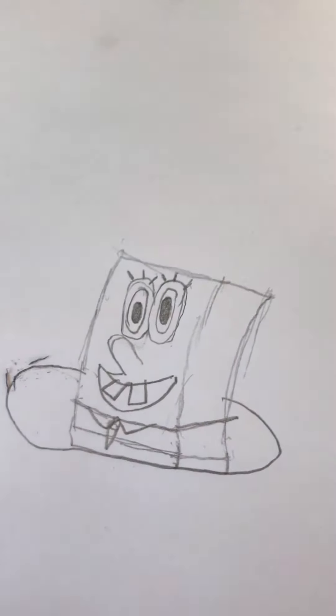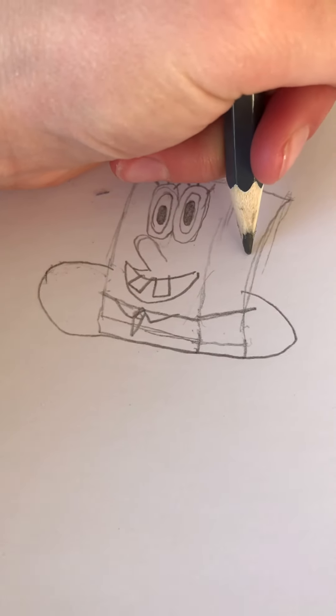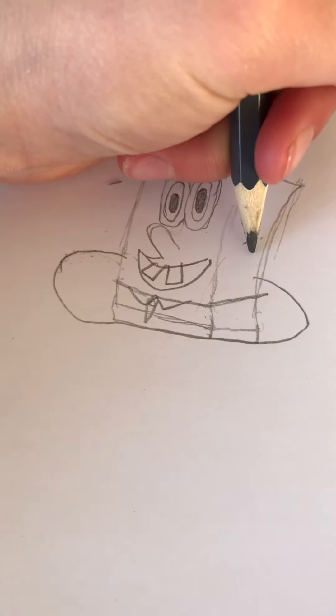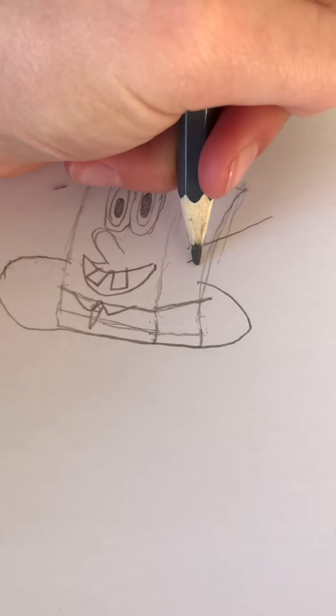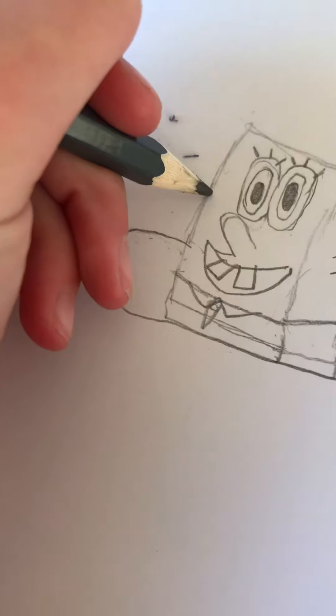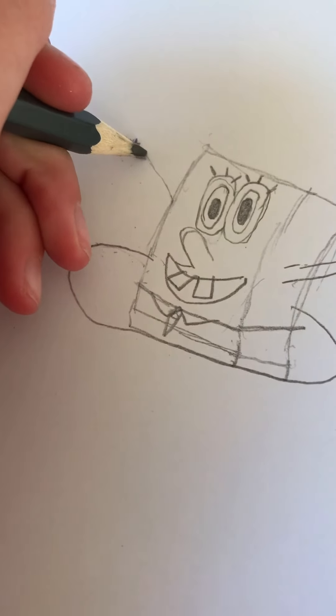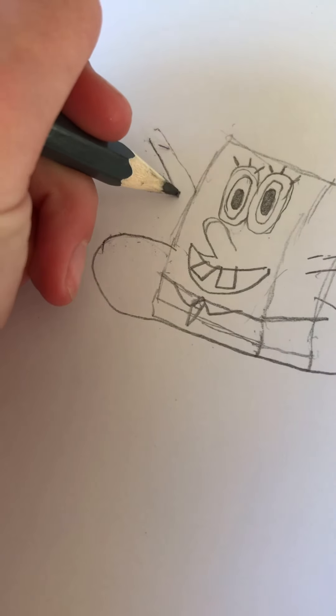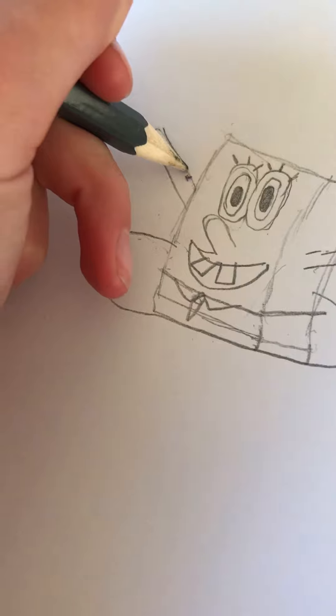Okay, now we're going to do the arms. So what you want to do is do two lines like that. Then you want to make them go up like that. Oops, I missed it. Up like that, kind of. And then for the other side, don't make it join like that. Make it join on the side like that. Just like that.